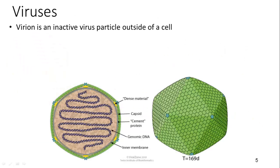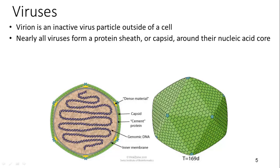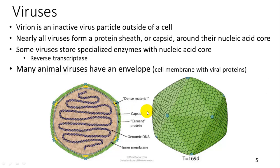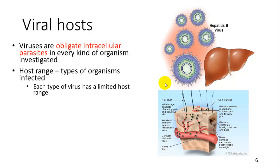There is also some important terminology when talking about viruses. A virus in its active form is infecting cells and living within them. When it's outside of a cell, it is called a virion. Nearly all viruses have a protein capsid and a nucleic acid core. Some viruses also have enzymes accessory to their nucleic acid, such as reverse transcriptase, which converts RNA into DNA. Many animal viruses also have an envelope, which helps viral proteins infiltrate a cell membrane.